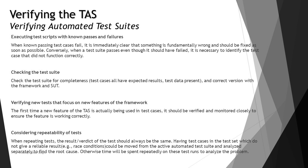Checking the test suite is equally important. Check the test suite for completeness — ensure test cases have all expected results or data present, and correct versions with the framework and the SUT. These tests often have a lot of connectivity or external resource dependencies. Test data might be imported from an XML or Excel file, or framework library functions may be stored in an external environment and called into the automation framework. Things may go wrong and might not meet the expected criteria, so it is important to ensure everything is working correctly.